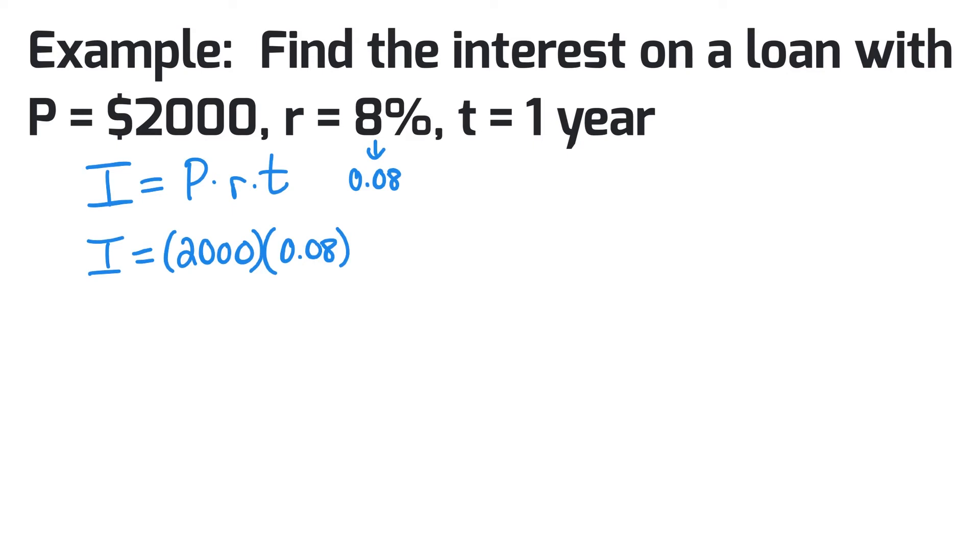Your term is 1 year, so when you do that, you're going to go ahead and do the math behind that. So I equals 2000, you're multiplying that by 0.08, and multiplying that by 1. Your final answer here is going to be 160.